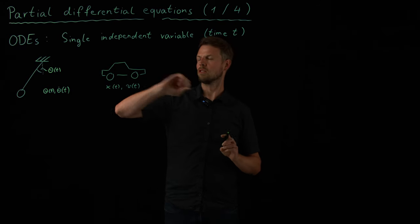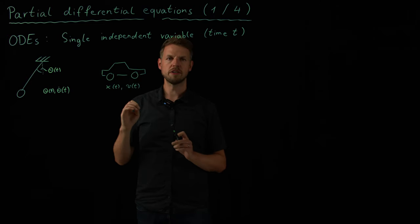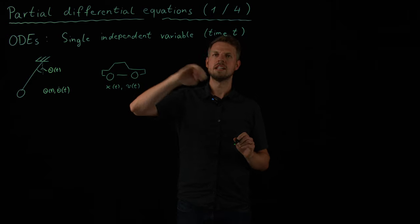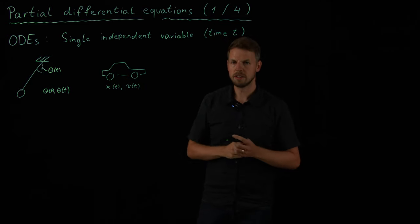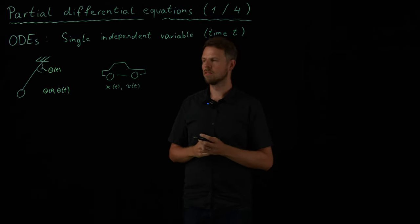So here is two examples of ODEs or ordinary differential equations. And the specific characteristic of ODEs is that we have a single independent variable. In the context of dynamic systems, this is usually time t. It doesn't have to be time t, it can be any variable, but usually we are using time as the independent variable.